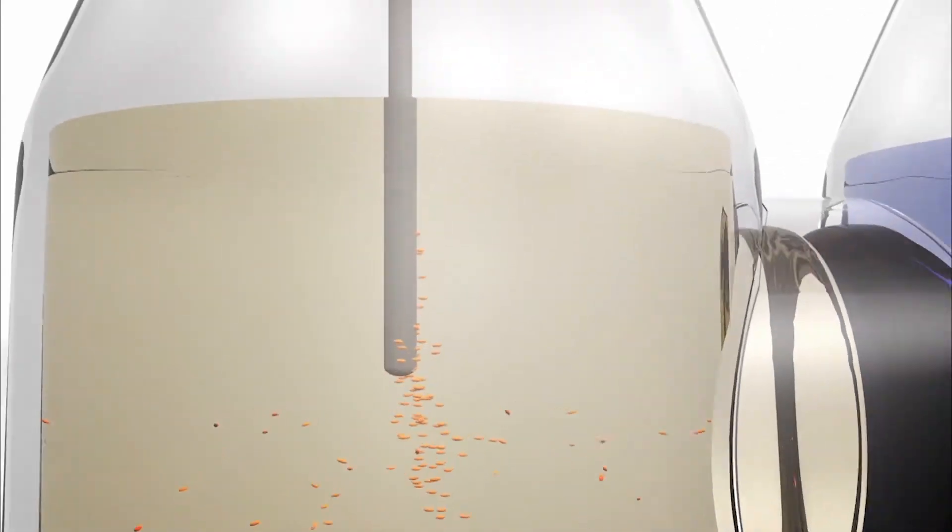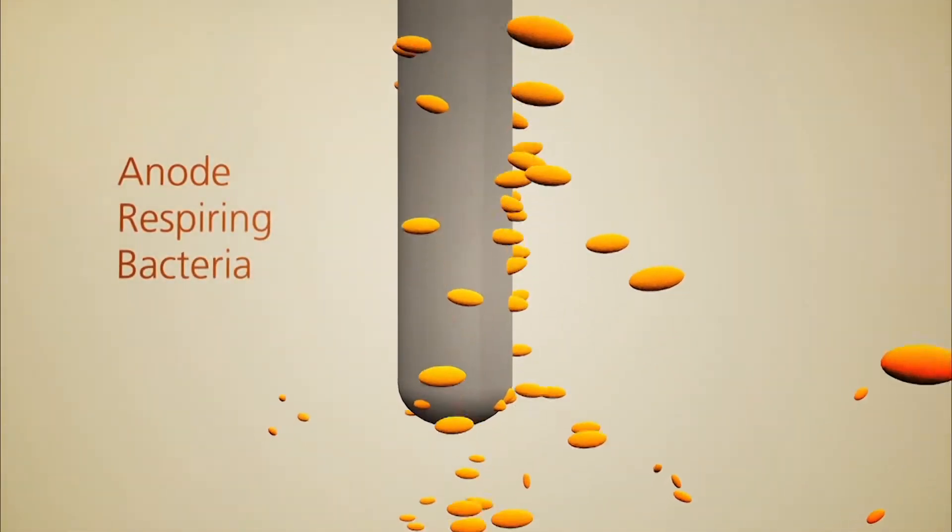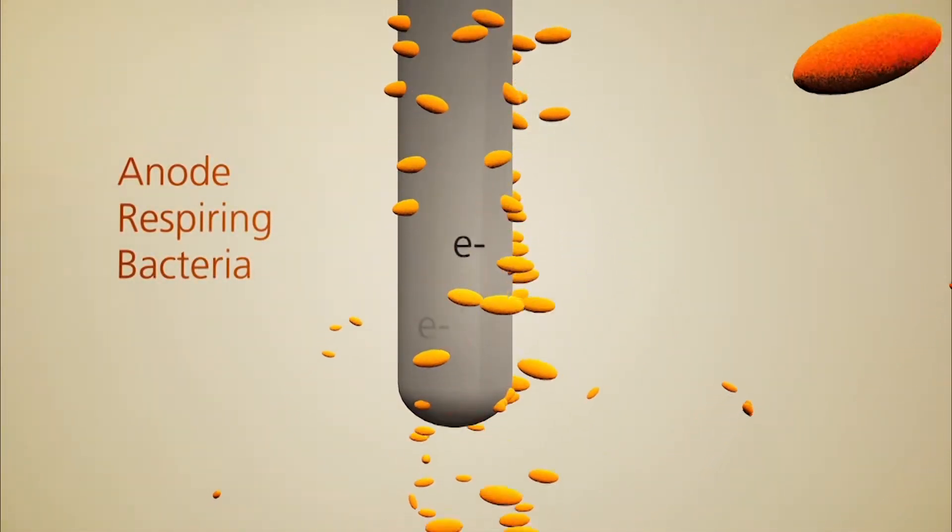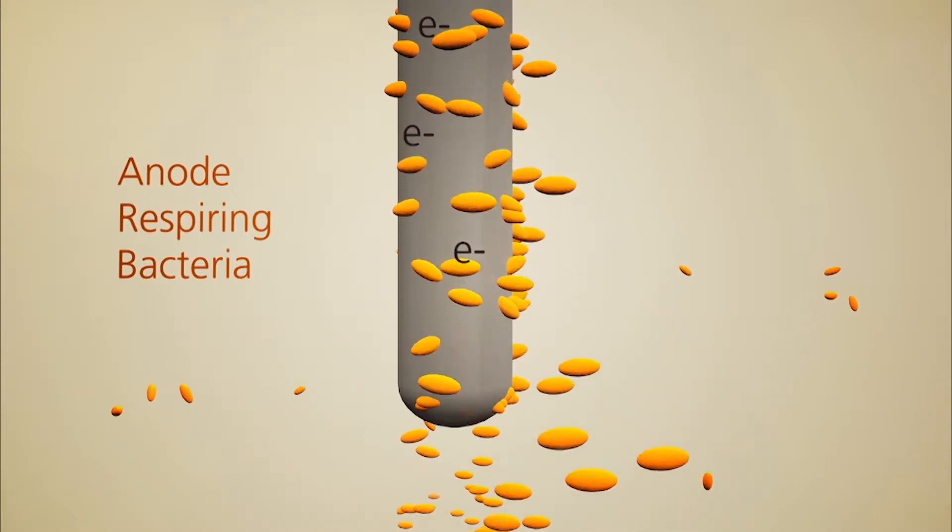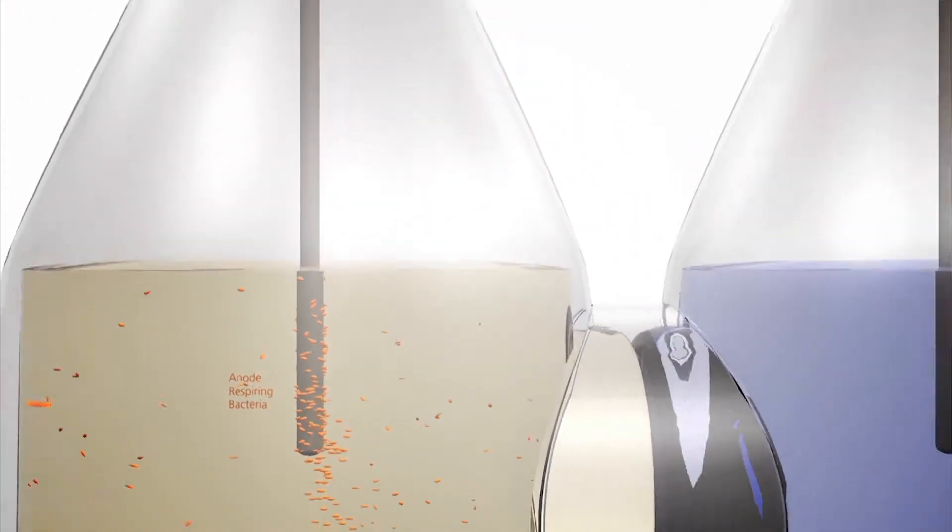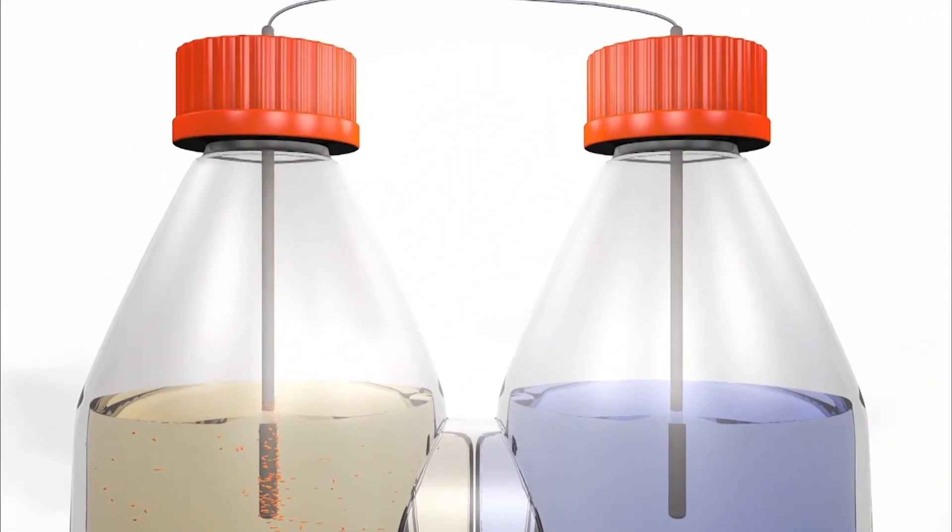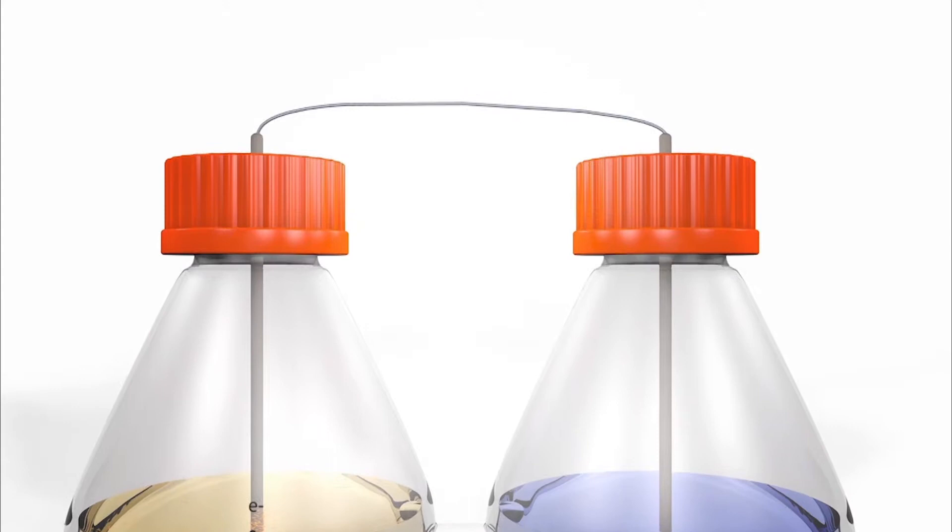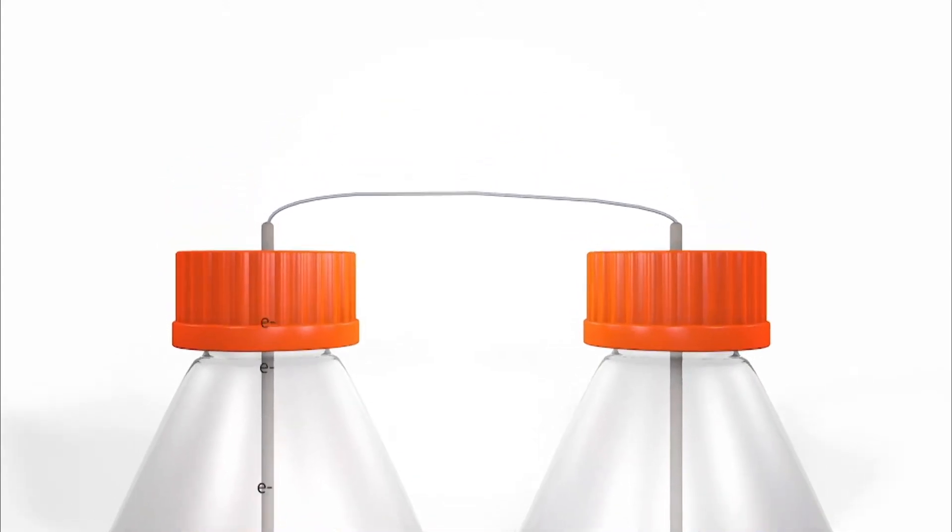And these rely on bacteria that have a really interesting way of living. They'll take organic material and oxidize it, that's the same as us. But what they'll do is they'll transfer the electrons not to oxygen, like we do, but they'll transfer it to the anode of a fuel cell.